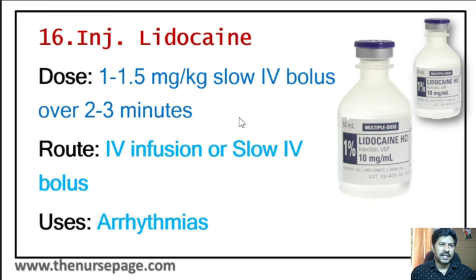Twenty-fourth medicine is amiodarone, trade name Cordarone. Uses include treatment of ventricular arrhythmias, atrial fibrillation, refractory arrhythmias, and cardiac arrest. Route is intravenous injection or IV infusion. Dosage is 150 to 300 milligram IV over 10 to 20 minutes, followed by a maintenance infusion of 1 milligram per minute for 6 hours, then 0.5 milligram per minute for 18 hours.